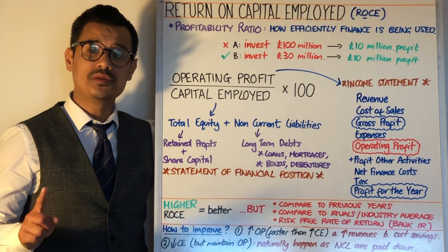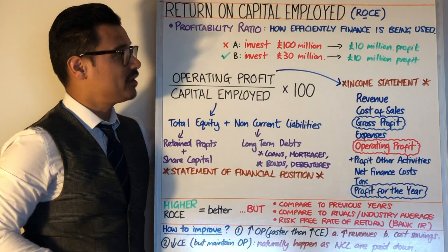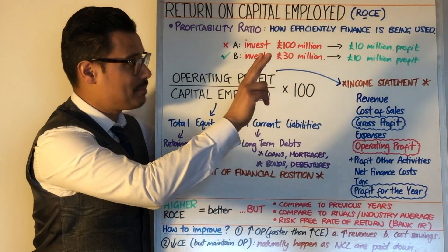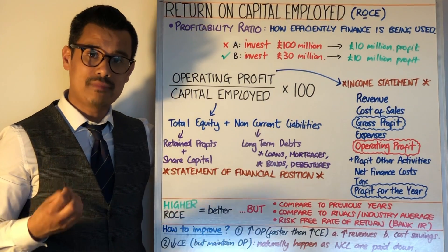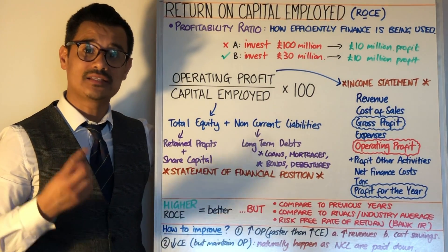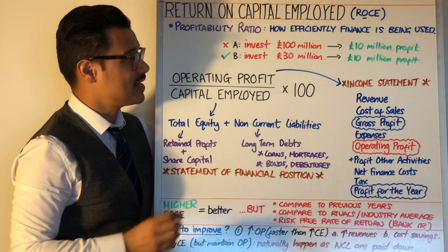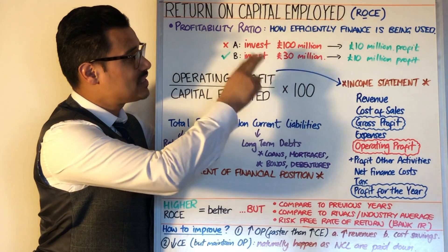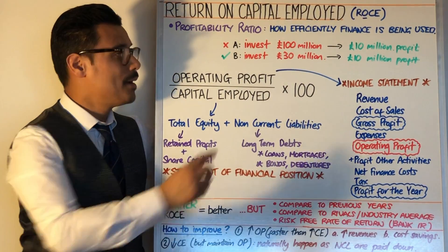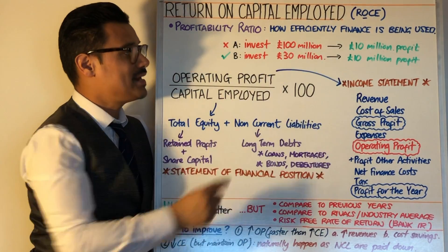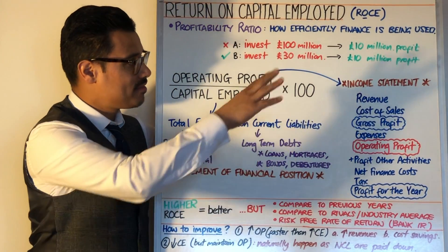As an example, take two businesses A and B. Business A generates 10 million pounds of profit and Business B also generates 10 million pounds of profit. However, there's a difference in the efficiency of managing finance to obtain that profit. Business A had to invest 100 million to get the 10 million, whereas Business B only had to invest 30 million pounds. So Business B is clearly much more efficient in how it manages its finance to obtain that profit level.